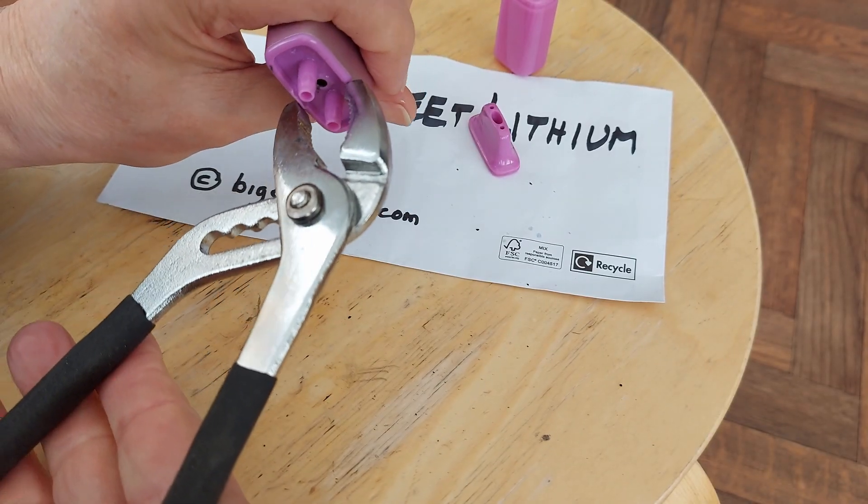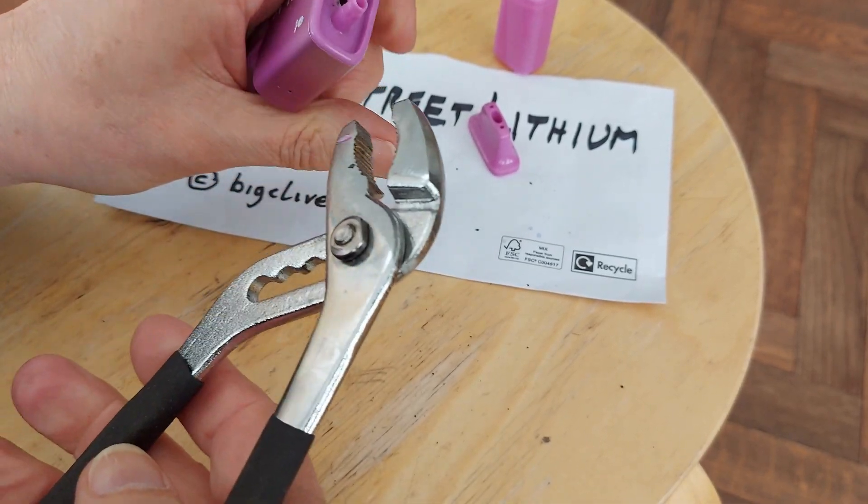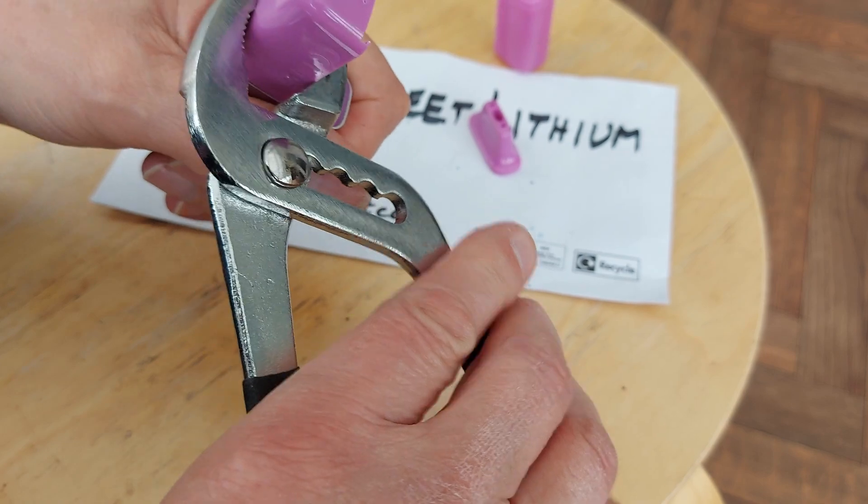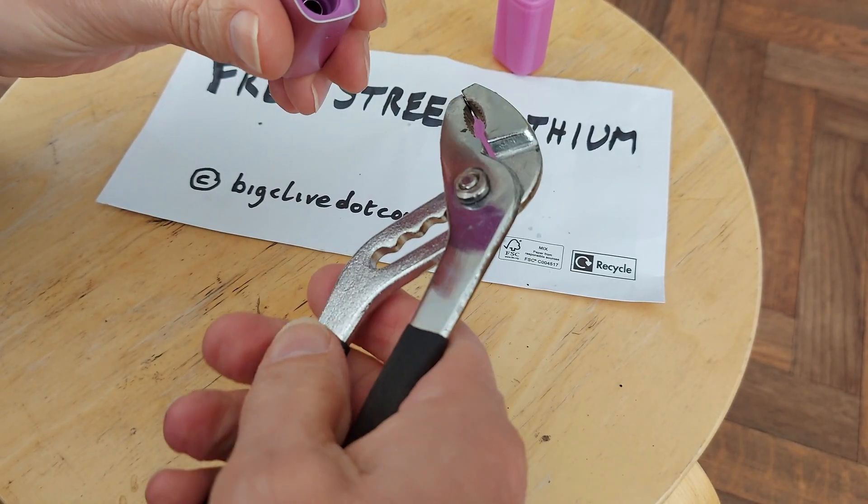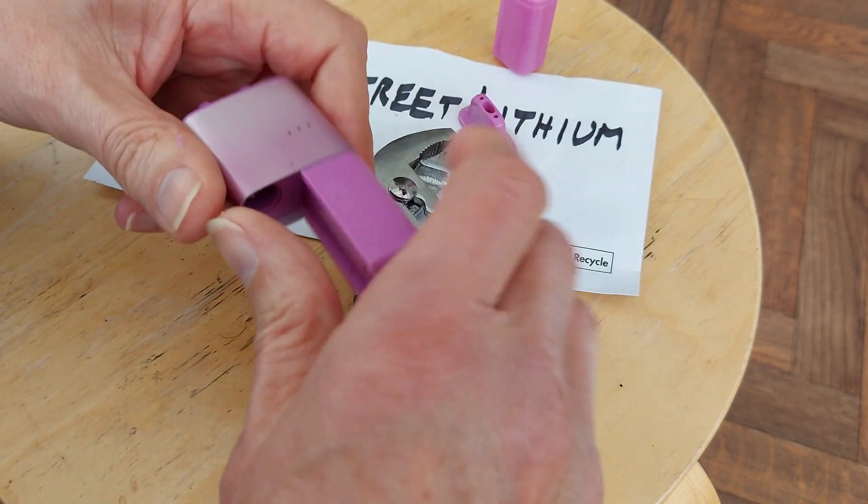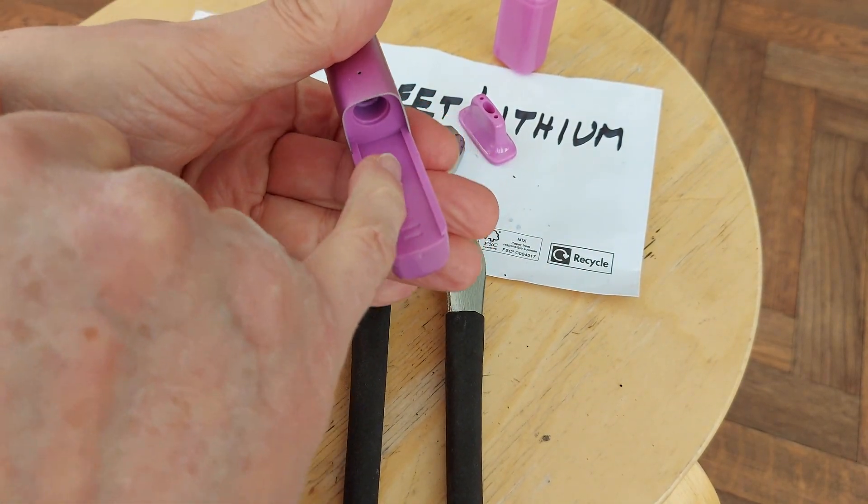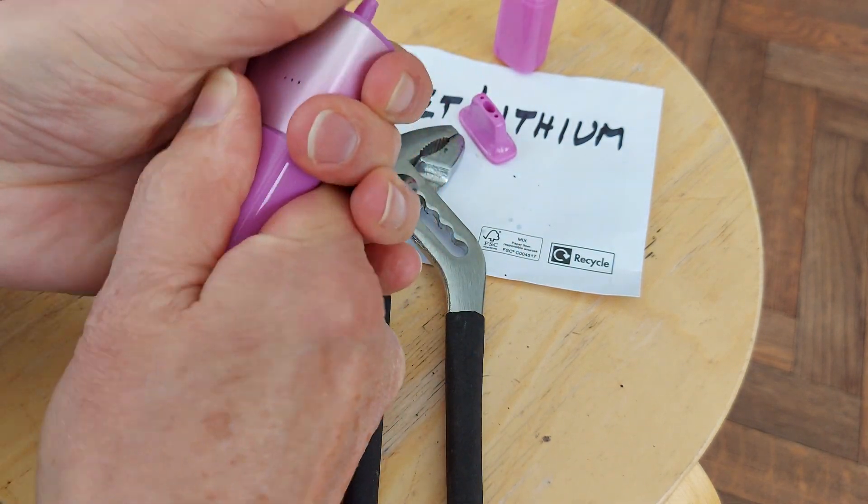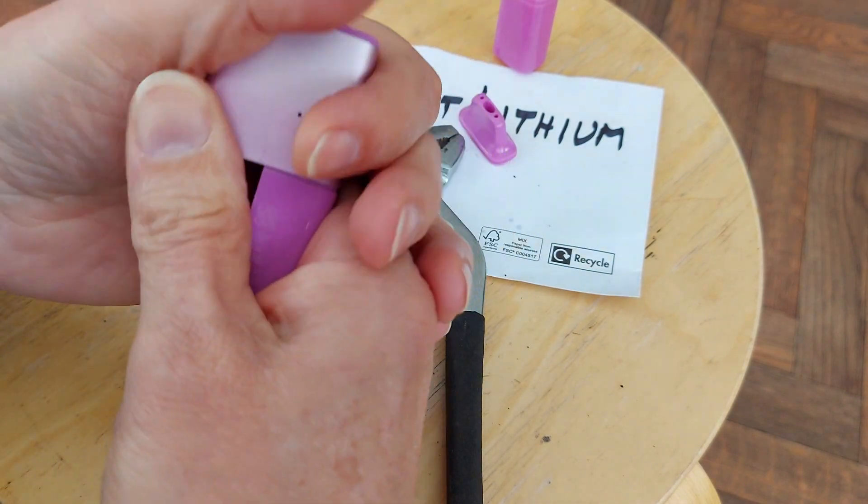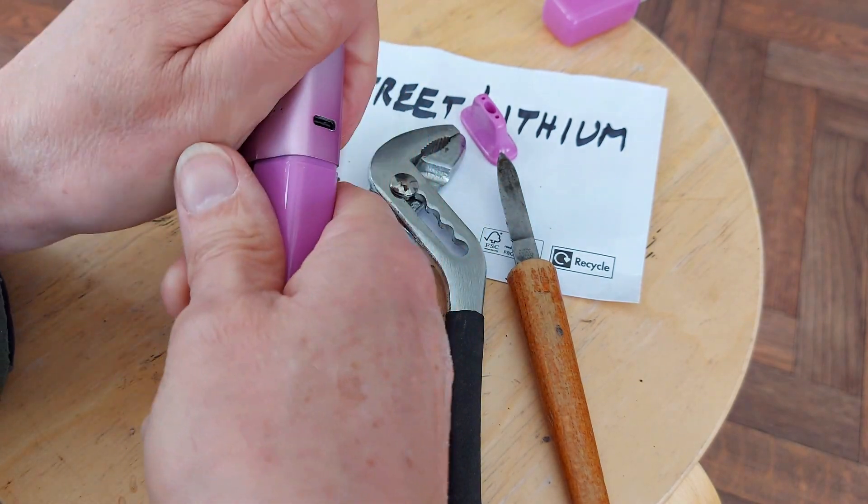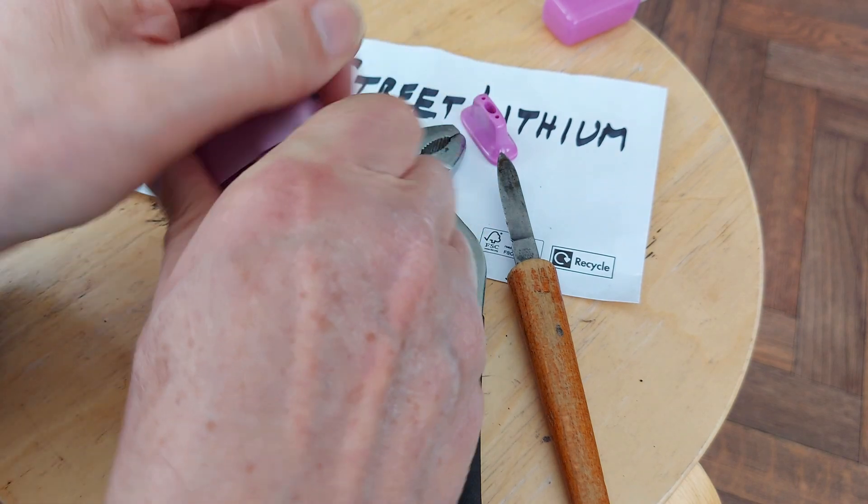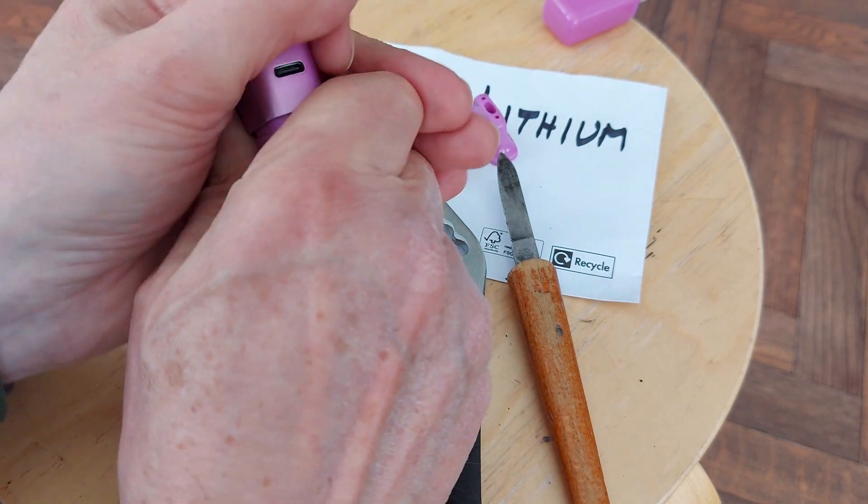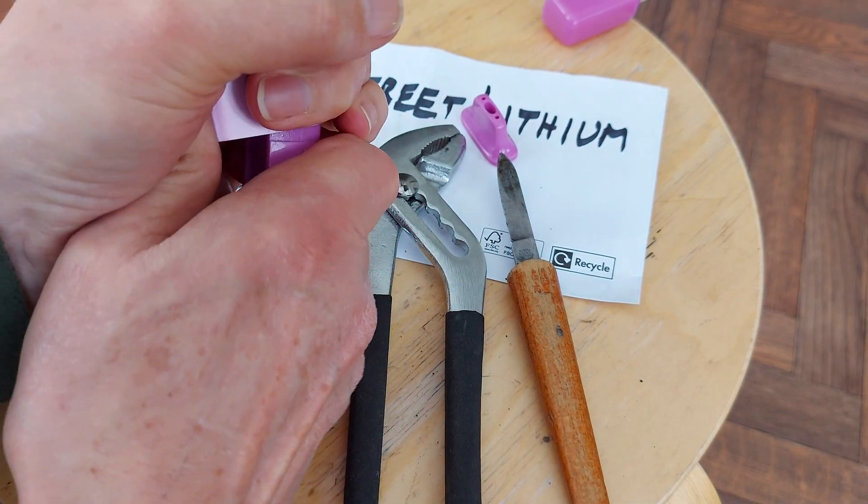It doesn't want to come apart easily. This is more interesting than I expected. That appears to be a solid moulding. Ah, that was a nice click, as if something came loose. Yeah, a bit more movement.